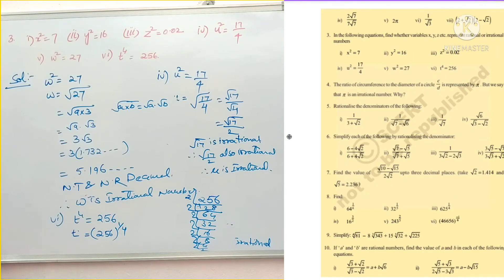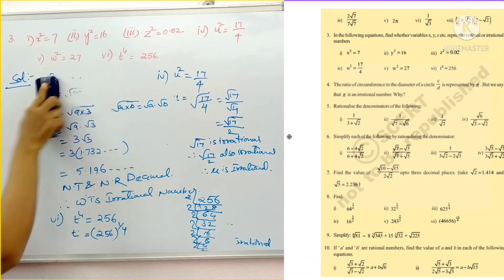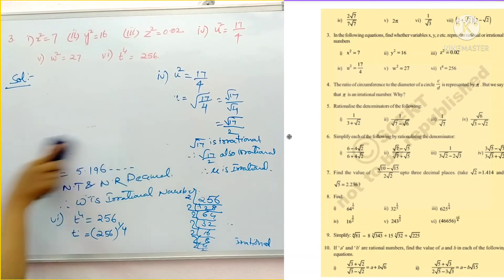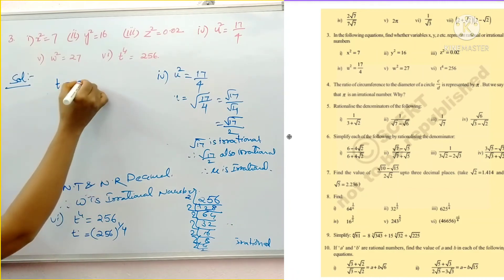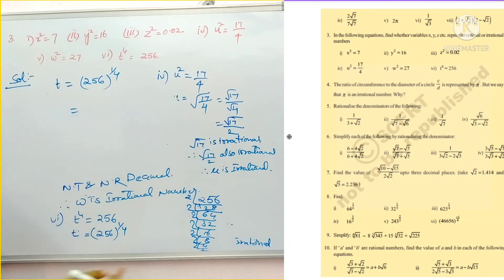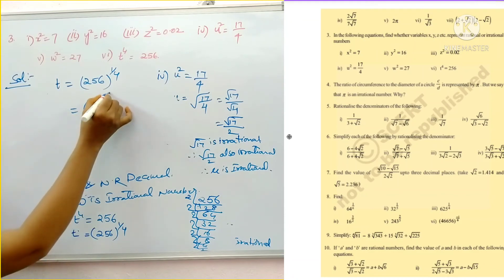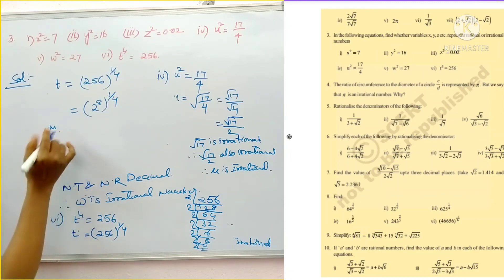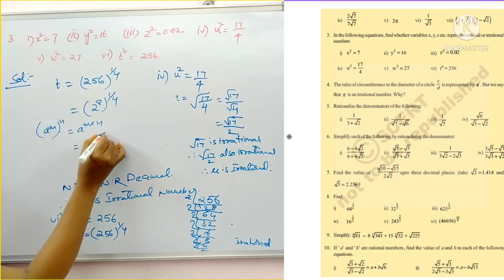So, how can we write this 256 as 2 power 8? Write that only. So, t equal to 256 whole power 1 by 4. And we can write this 256 as 2 power 8. And here whole power 1 by 4. So, we know a power m whole power n is equal to a power m into n. So, basing on this formula, 2 power 8 into 1 by 4.